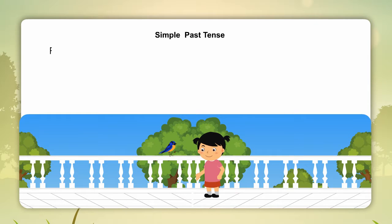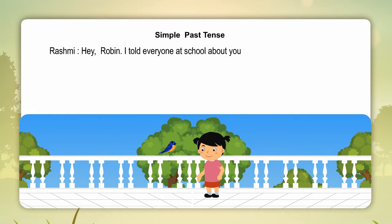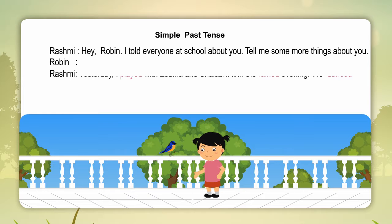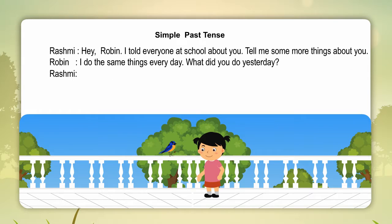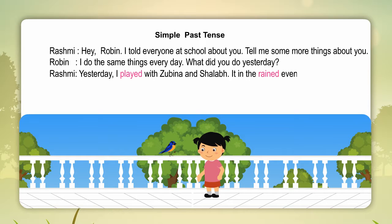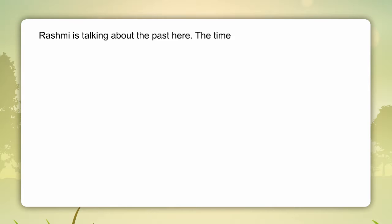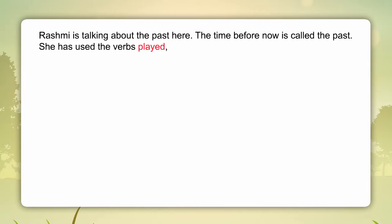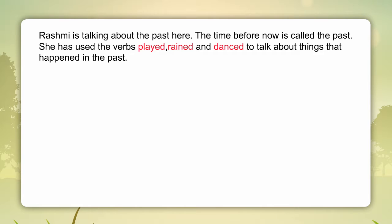Simple past tense. Rashmi: Hi Robin, I told everyone at school about you. Tell me some more things about you. Robin: I do the same things every day. What did you do yesterday? Rashmi: Yesterday, I played with Zubina and Shalab. It rained in the evening. We danced in the rain. Rashmi is talking about the past here. The time before now is called the past. She has used the verbs played, rained and danced to talk about things that happened in the past. These verbs are in the simple past tense.